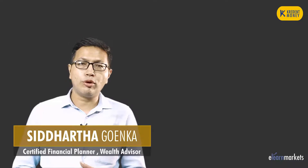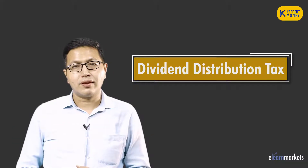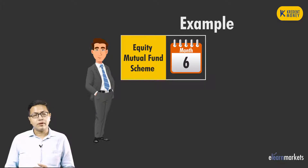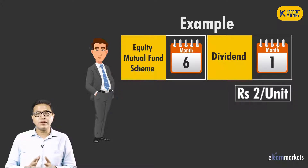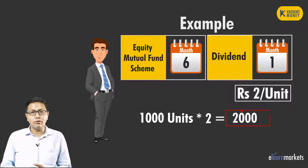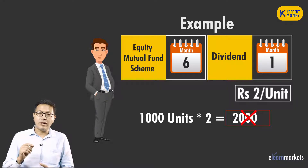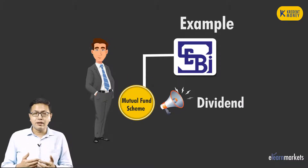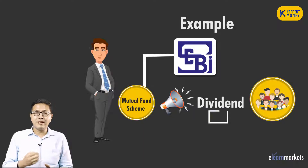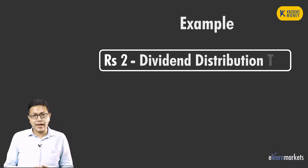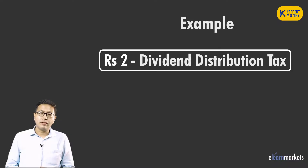Hello friends, I am Siddharth and today I am going to talk about the Dividend Distribution Tax. Around six months back I invested into an equity mutual fund scheme, and around one month back that scheme declared a dividend of rupees 2 per unit. I had 1000 units in my account. So does that mean I will get 2 rupees into 1000 units, that is 2000 rupees, straight into my bank account? No, it is not that, because the government — along with SEBI and the income tax department — has made a rule: whenever a mutual fund company declares a dividend to you the investor, they will deduct some tax at source, and only then pay you the rest of the amount. Out of rupees 2, they will deduct some tax known as the Dividend Distribution Tax and pay me the rest.